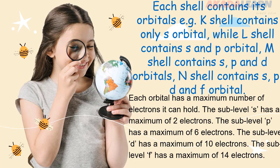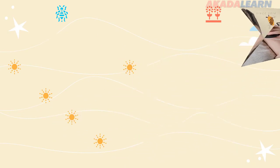Each orbital has a maximum number of electrons that it can hold. The sub-level S has a maximum of 2 electrons, while that of P has a maximum of 6 electrons. The D orbital can carry a maximum of 10 electrons, while the sub-level of F can carry a maximum of 14 electrons.